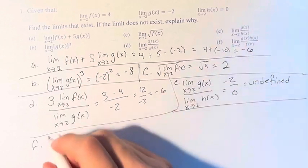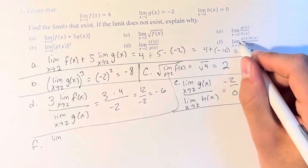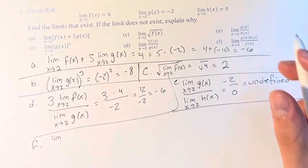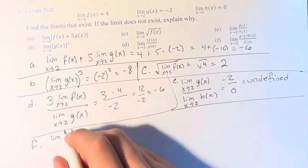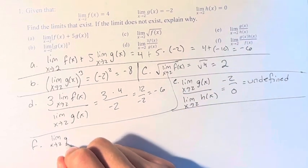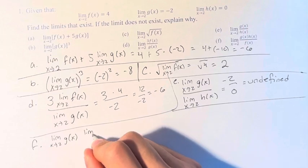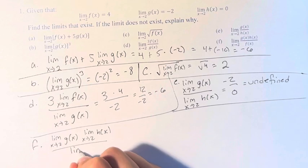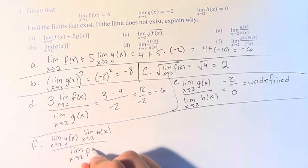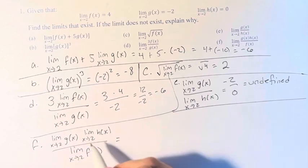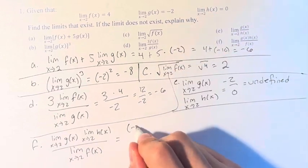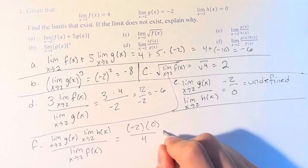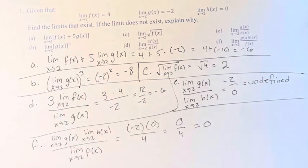And finally, we have the limit as x approaches 2 of g of x times h of x over f of x. We can take these individual limits: the limit as x approaches 2 of g of x, times the limit as x approaches 2 of h of x, over the limit as x approaches 2 of f of x. We just have to plug these values in, so we have negative 2 times 0 over 4. This is 0 over 4, which is 0.